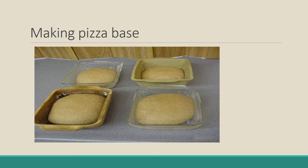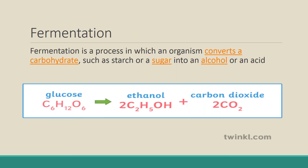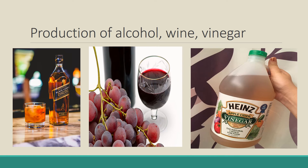Yeast is also used for making pizza base. When talking about the commercial use of microorganisms, they are used for making alcoholic beverages, which happens through anaerobic respiration. This process is specifically called fermentation. Fermentation is a process in which organisms convert carbohydrates such as starch or sugar into alcohol or acid under anaerobic conditions. Products of fermentation include alcohol, wine, vinegar, etc.